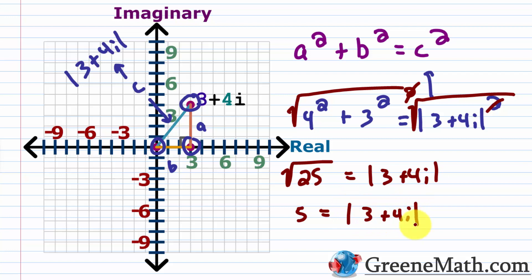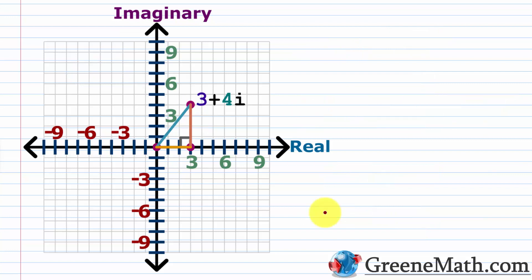That was fairly easy to work through, but it was a lengthy process. We don't want to have to pull out a complex plane each time to figure out the absolute value of a complex number. You've got to be thinking there must be an easier way — and in fact there is. Just like we derived a distance formula when finding the distance between two points on a coordinate plane, we can do the same thing for finding the absolute value of any complex number.